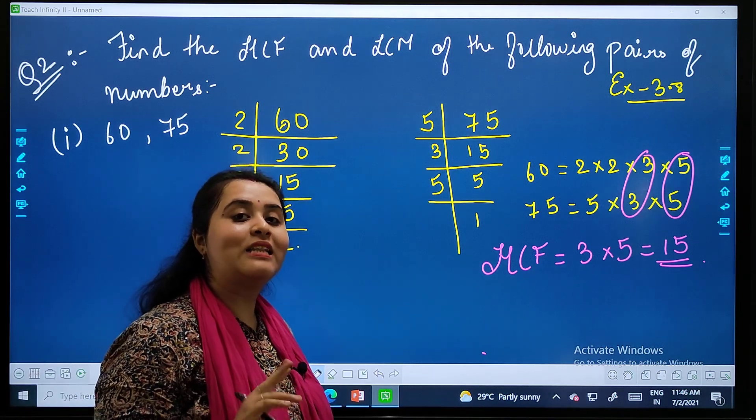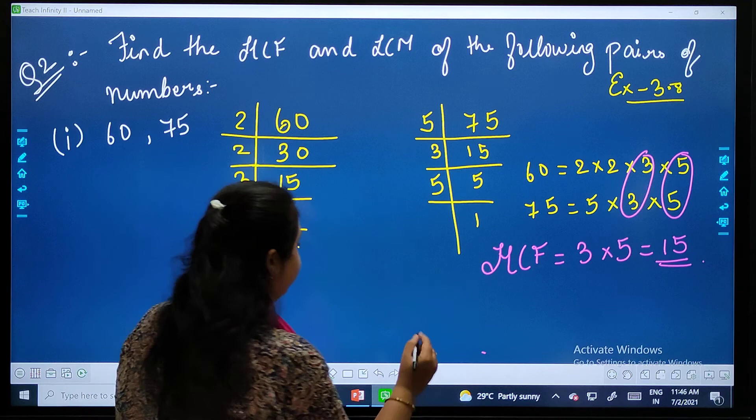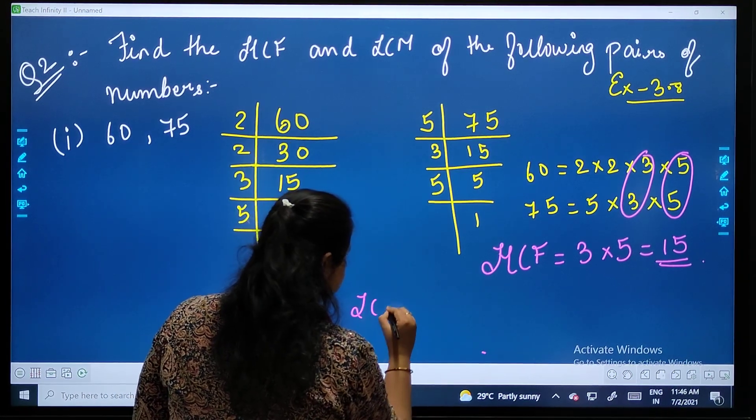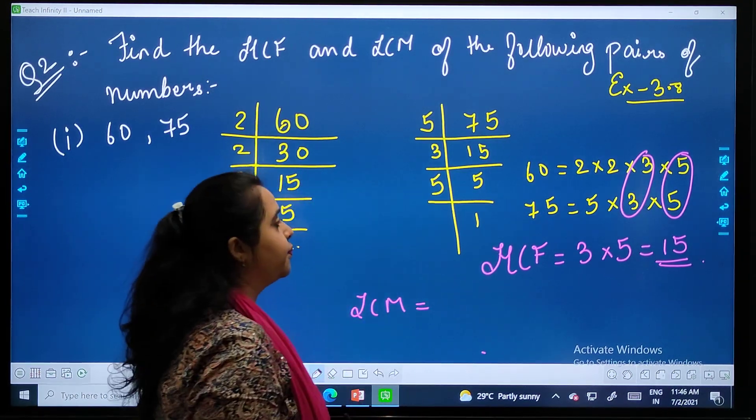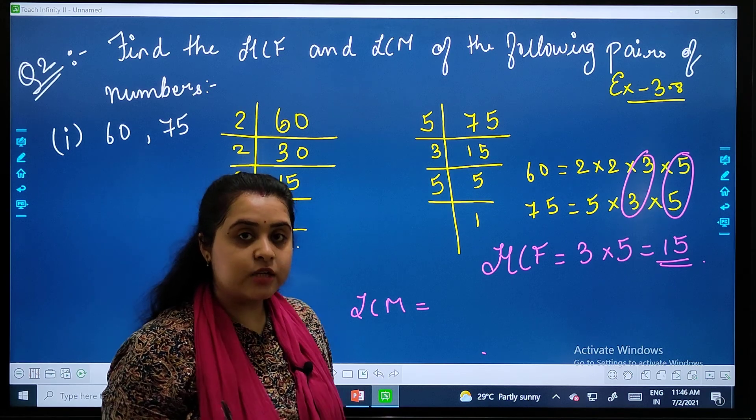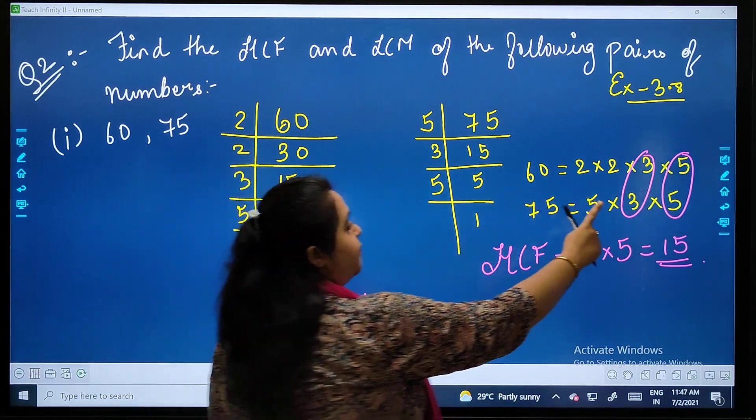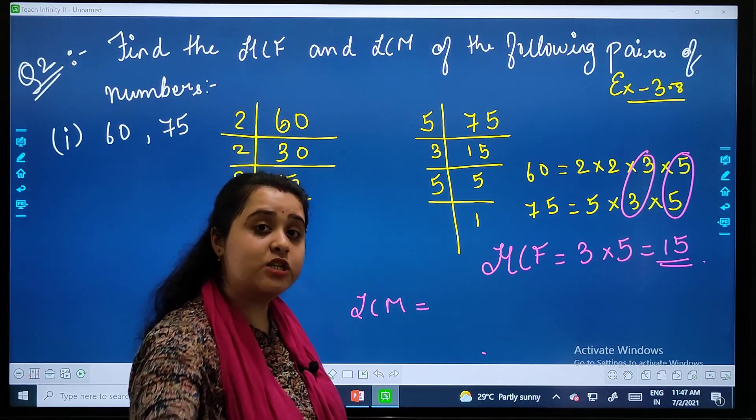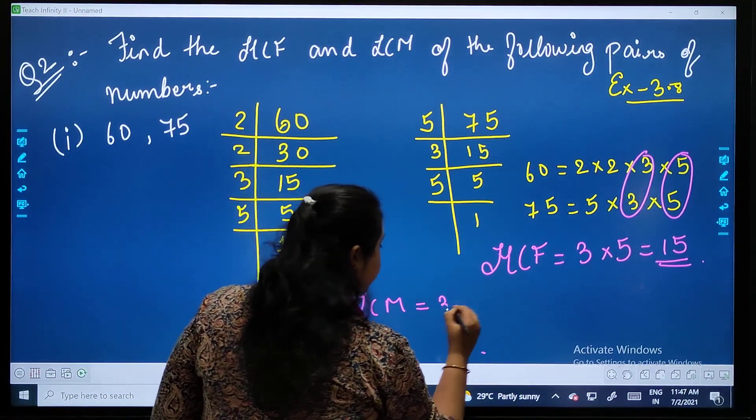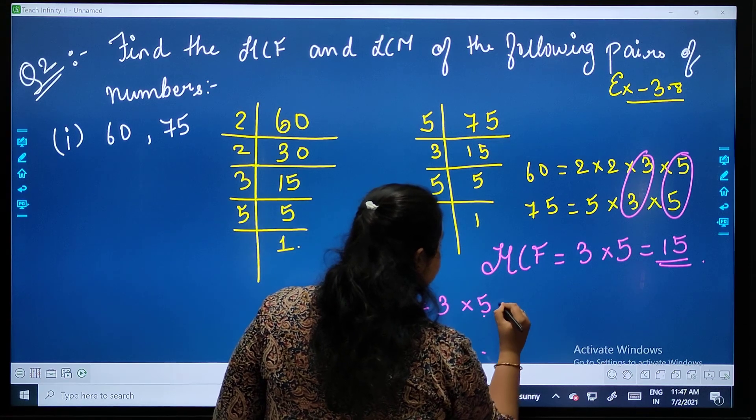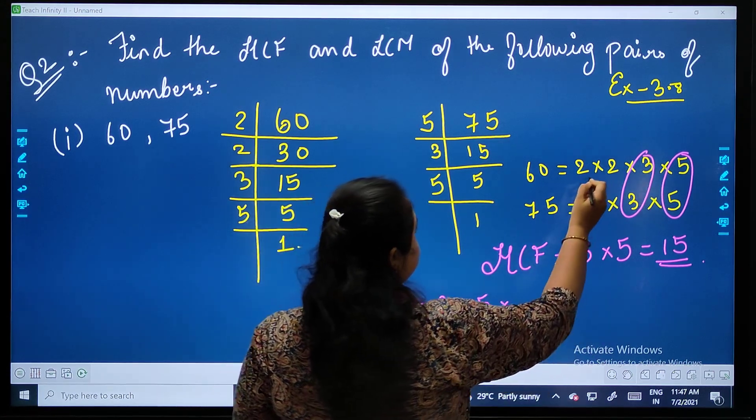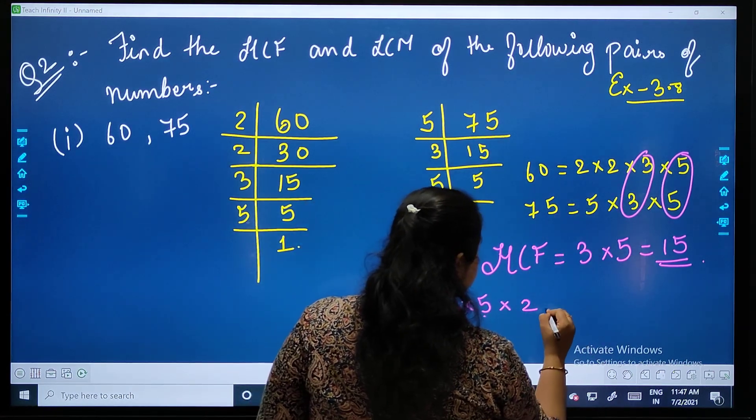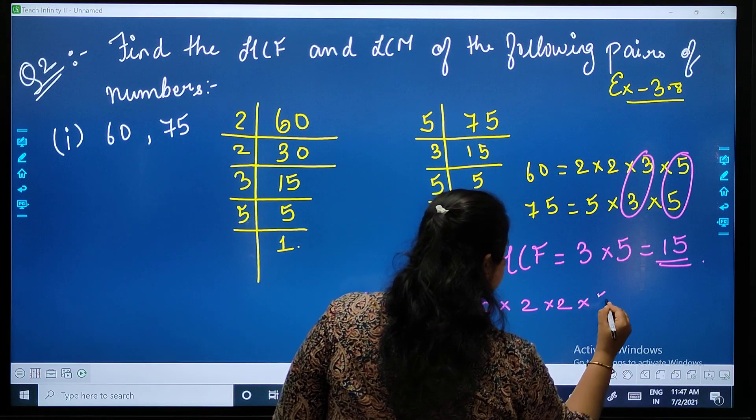Now we will be moving to LCM. LCM equals to, if pairs are there, then one member will come and represent one pair. That means 3 into 5, and then the remaining numbers: 2 into 2 into 5.